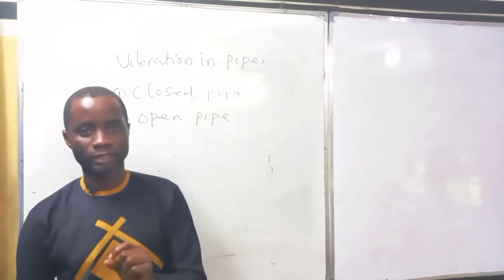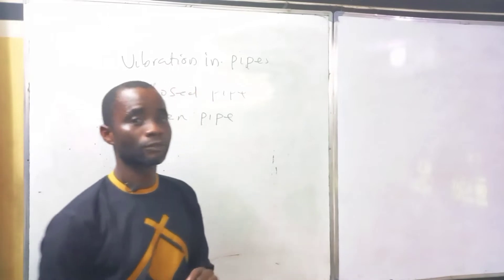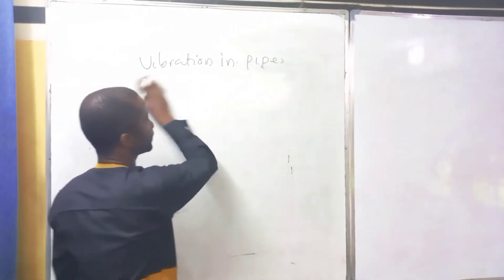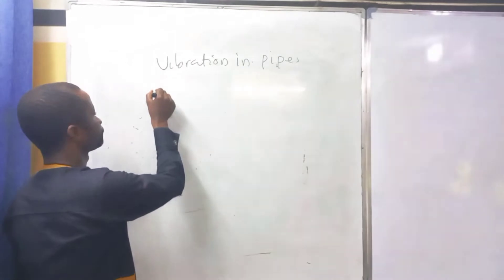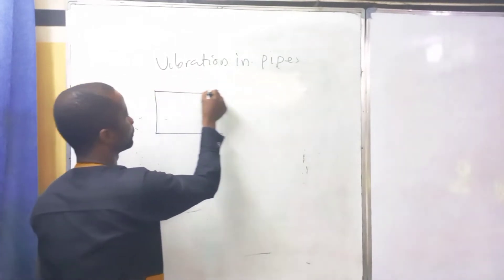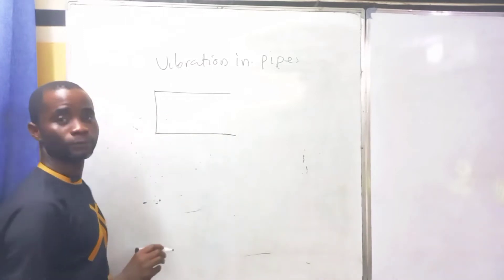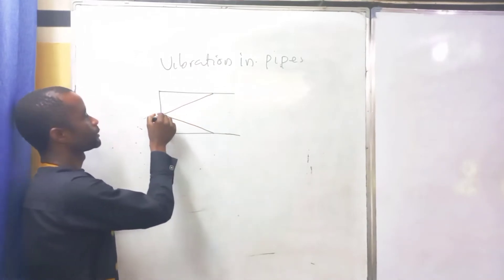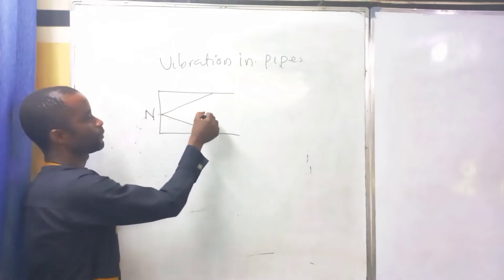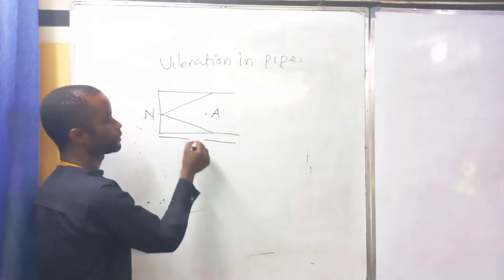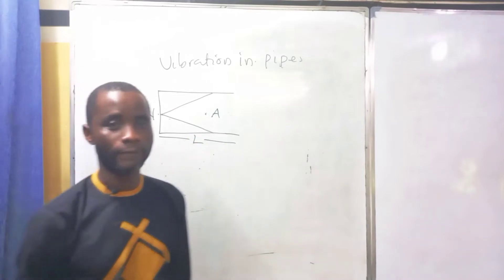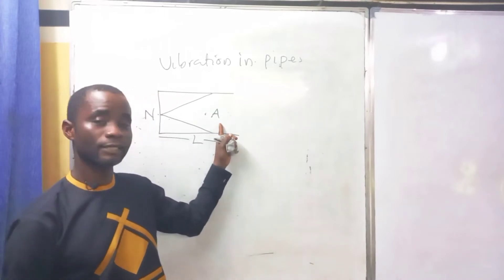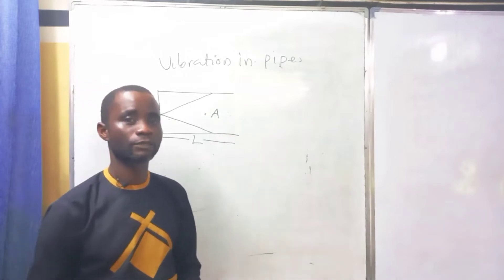What is a closed pipe? A closed pipe is a pipe that opens at one end. Here we are going to look at the fundamental frequency of the notes produced. Now let me support my explanation with a diagram. When the air is set in, you are going to have two points. Here is what you call a node, and a point here is what you call an anti-node. From here to this point is what you call the length of the pipe.